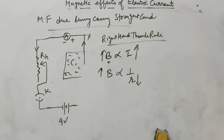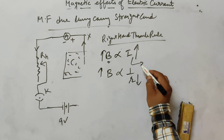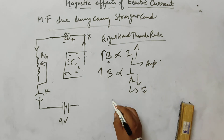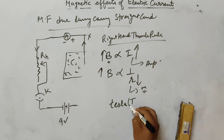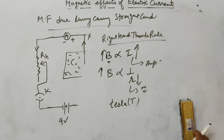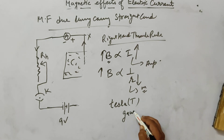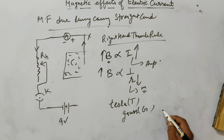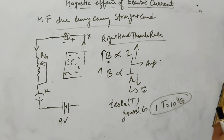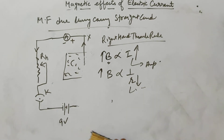These are the two factors of magnetic field. Electric current is measured in amperes, distance is measured in meters, and magnetic field is measured in Tesla (T). Nikola Tesla was the scientist after whom the unit is named. A smaller unit is Gauss (G), and one Tesla equals 10 to the power of 4 Gauss.